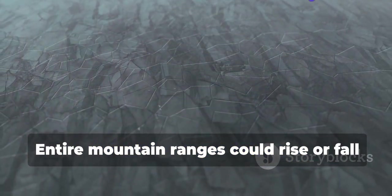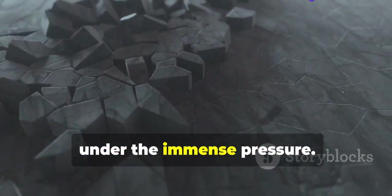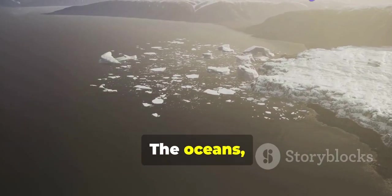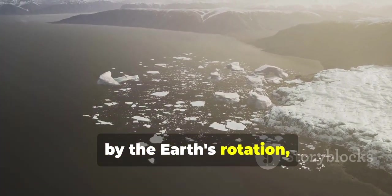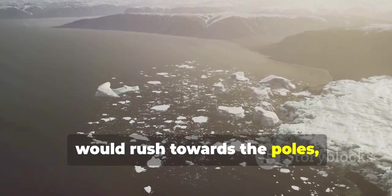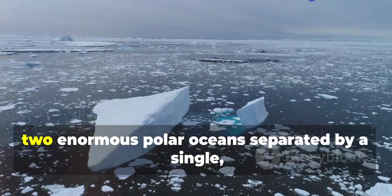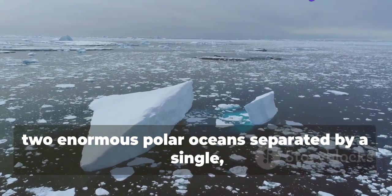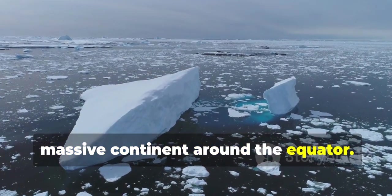Entire mountain ranges could rise or fall as the Earth's crust cracked and groaned under the immense pressure. The oceans, no longer held in their current positions by the Earth's rotation, would rush towards the poles, flooding vast areas of land and creating two enormous polar oceans separated by a single massive continent around the equator.